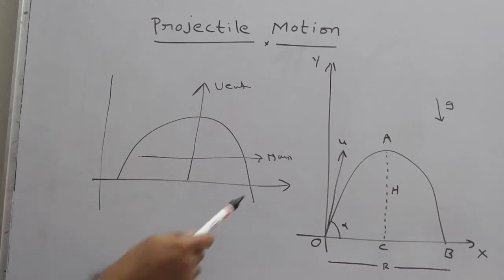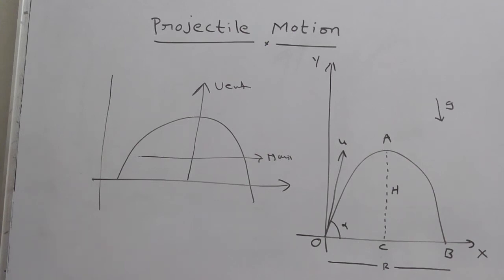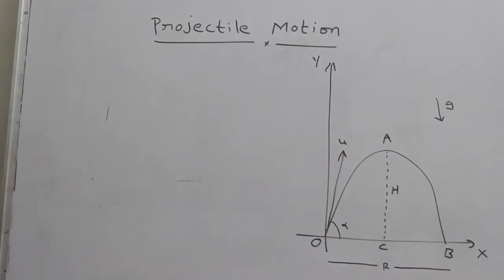Now come to the definition. What is the definition of projectile motion? If a particle is thrown neither parallel nor perpendicular to the earth surface,